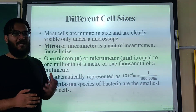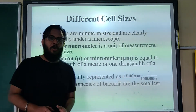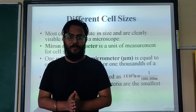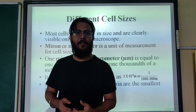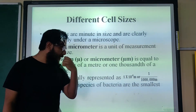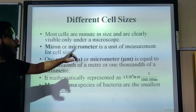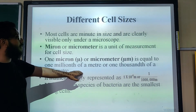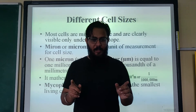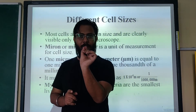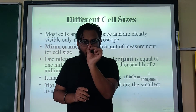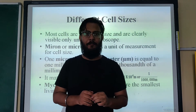Now let's talk about different cell sizes. Cells cannot be seen by the naked eye — you need a microscope because they are very tiny. The unit of measurement for cells is the micron or micrometer. One micron (or one micrometer) is equal to one millionth of a meter, or one thousandth of a millimeter. So if you take a millimeter and divide it into a thousand equal pieces, one piece would be the size of a cell.